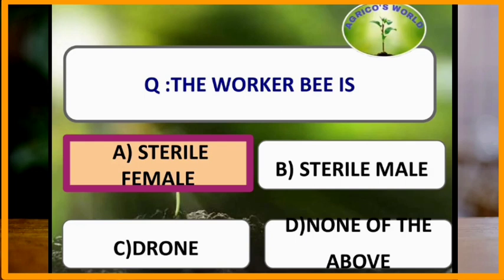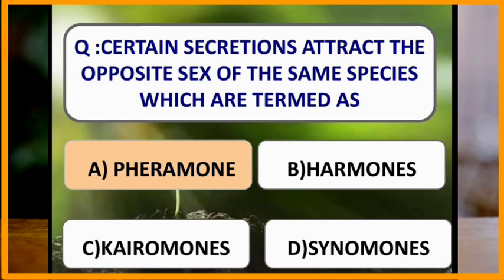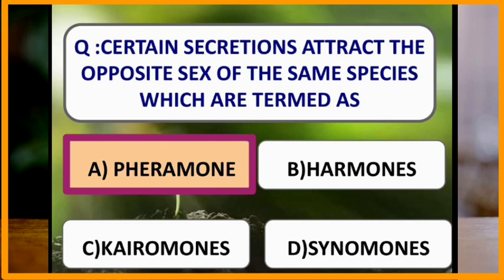A sterile male is a drone. Certain secretions that attract the opposite sex of the same species are termed pheromones.